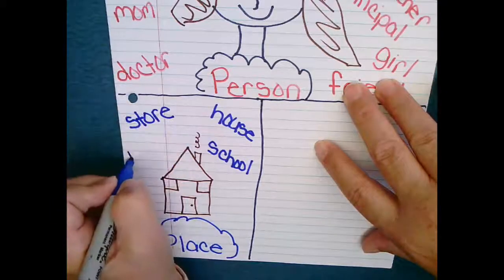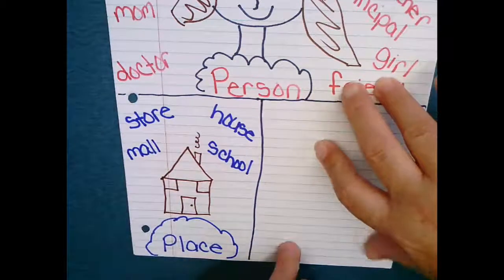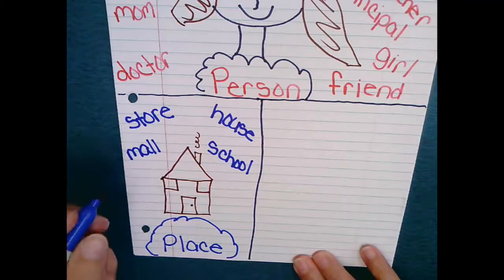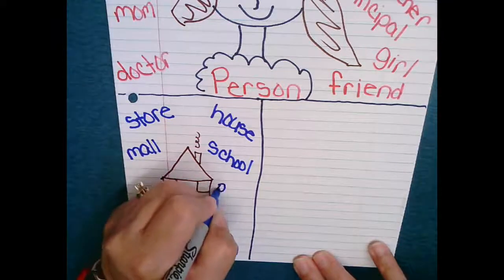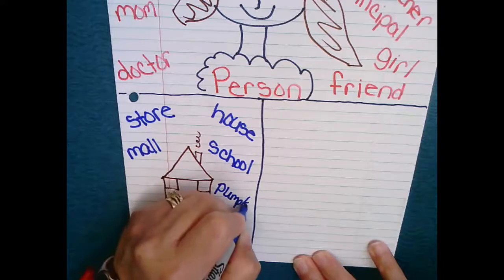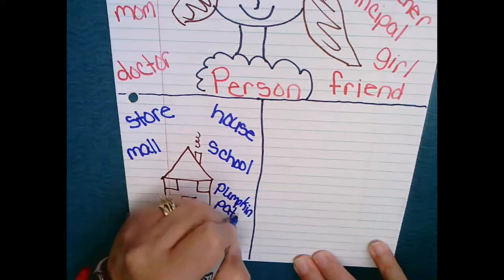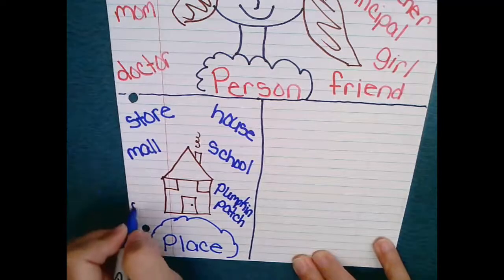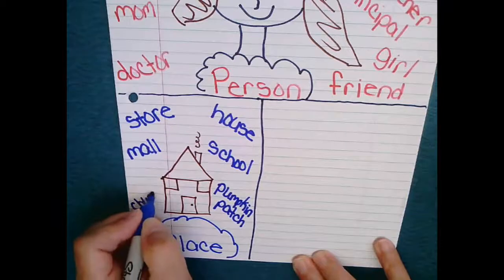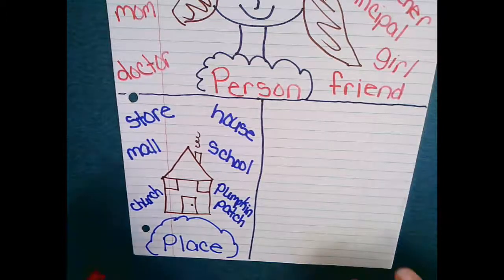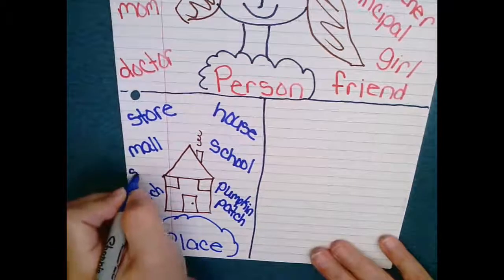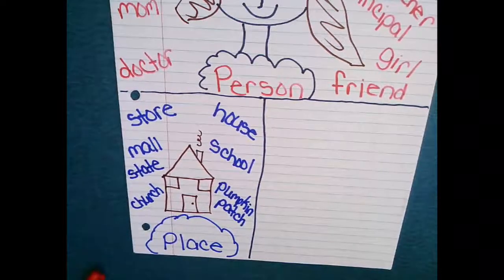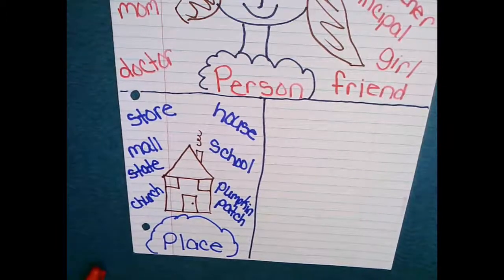All right, so let's think about some places. We know of course that we have a house, our school is a place and again I'm using lowercase letters, a store, the mall is a place, my favorite place, the pumpkin patch. It won't be long until we'll be going to or you'll be visiting pumpkin patches hopefully. Your church if you go to church could be a place, so there are just lots of places. I'm going to say state, that is a place.